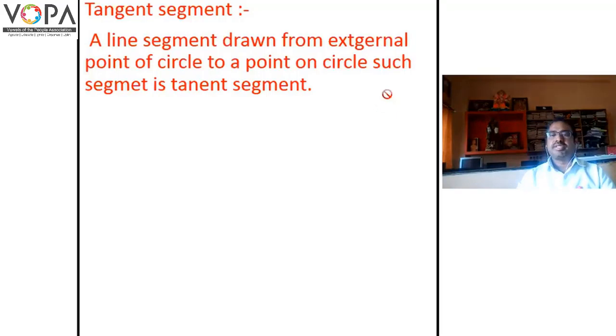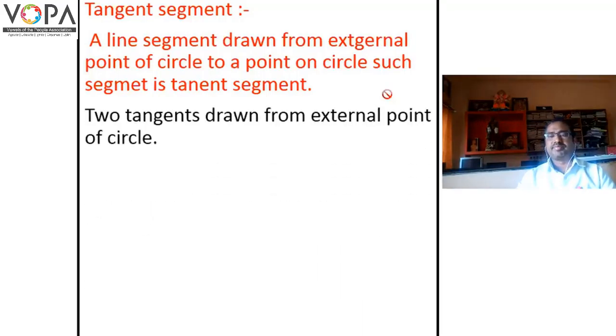Understand with the help of the figure. In a circle with center O, point D is an external point of the circle. There are two tangents drawn from the external point of the circle.